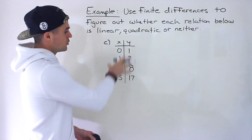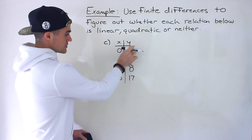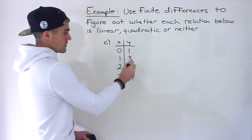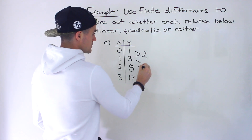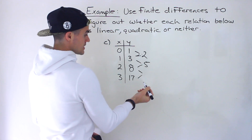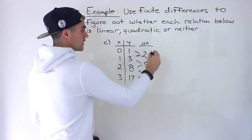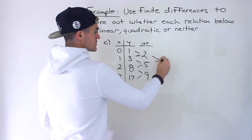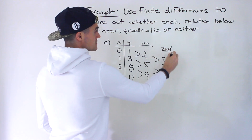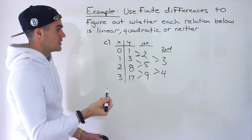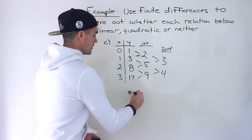For the final table, part C, the x values go up by the same amount. Taking first differences: 3 minus 1 is 2, 8 minus 3 is 5, and 17 minus 8 is 9 — first differences are not constant. Then second differences: 5 minus 2 is 3, and 9 minus 5 is 4 — not constant either. So it's not linear, not quadratic. It is neither.